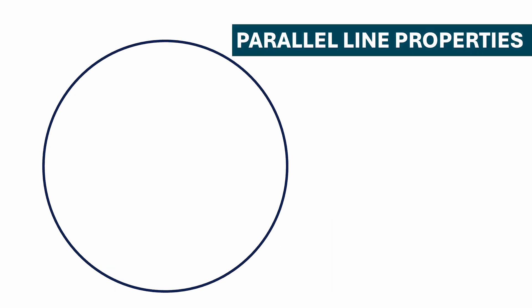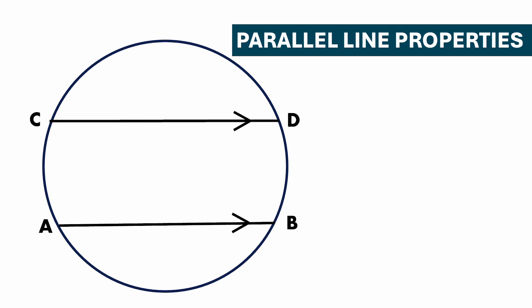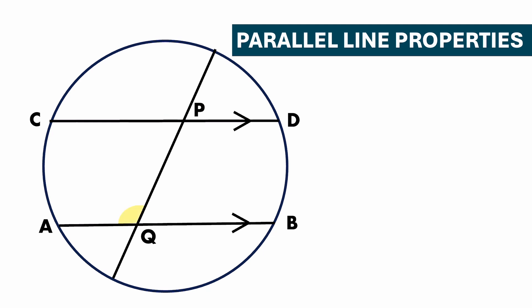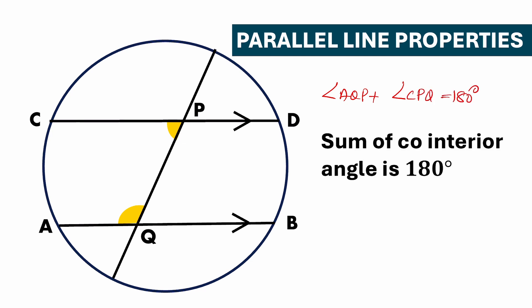Next we will discuss parallel line properties. If AB is parallel to CD and BQ is a transversal line, then angle PQB equals angle CPQ, and angle AQP equals angle DPQ — alternate angles are equal. Also, angle AQP equals angle CPM because corresponding angles are equal. Similarly, angle BQP equals angle DPM. Additionally, angle AQP plus angle CPQ equals 180 degrees, and angle BQP plus angle QPD equals 180 degrees, because co-interior angles sum to 180 degrees.